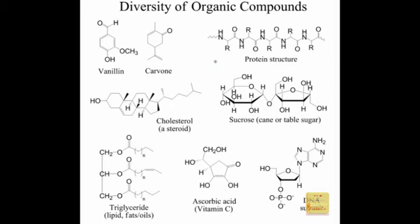Everything we eat and digest is an organic molecule. The structure of a protein shows amino acids linked together, where the R group represents some kind of carbon chain. Depending on what the R group is and the order and length of the chain, that defines what protein you have and its function as an enzyme. It's a carbon and nitrogen chain — definitely an organic molecule. Sucrose — table sugar — has this structure. All sugars, starches, and saccharides are organic molecules: carbon, hydrogen, and oxygen, put together as rings. Sucrose has a six-membered ring with an oxygen, a five-membered ring with an oxygen, linked by an oxygen bridge.